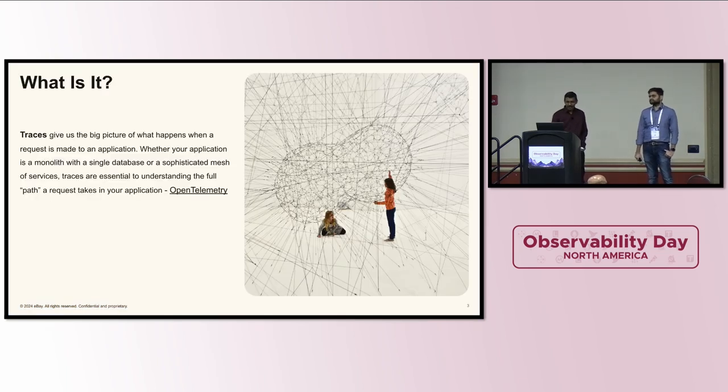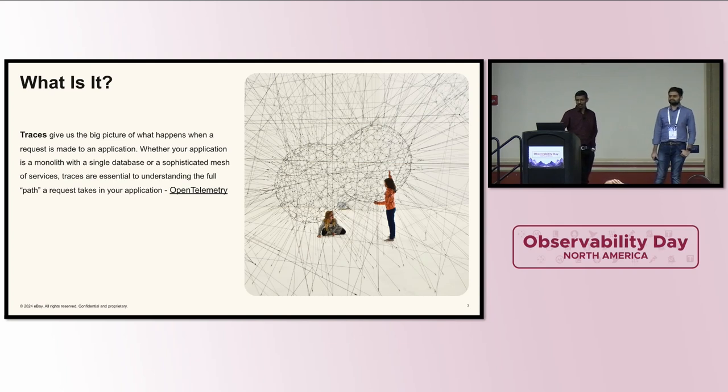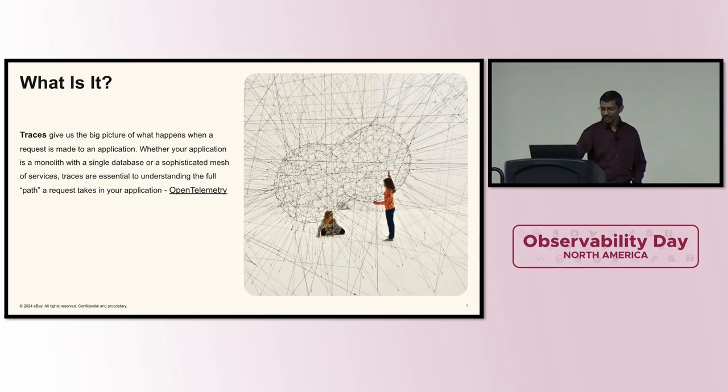So, what is distributed tracing? A trace is something that gives us the big picture of what happens when a request is made to an application. Whether your application is a monolith with a single database or a sophisticated mesh of services, traces are essential to understanding the full path a request takes in your application. This is the by-the-book definition for a trace. A trace is very useful in very complicated environments, and at eBay, a request to either view an item or search for items, check out, all of these have a lot of microservices and databases that interact with each other before the user intent is fulfilled. And for such a use case, distributed tracing is very powerful when it comes to triaging active issues.